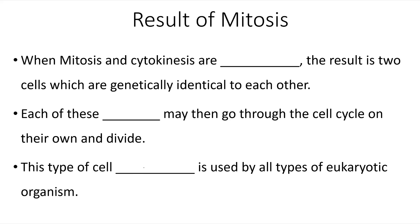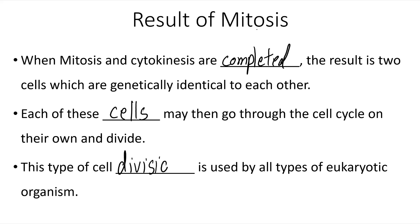When mitosis and cytokinesis are completed, the result is two cells which are genetically identical to each other. Each of these cells may then go on through the cell cycle on their own and divide. This type of cell division is used by all types of eukaryotic organisms.